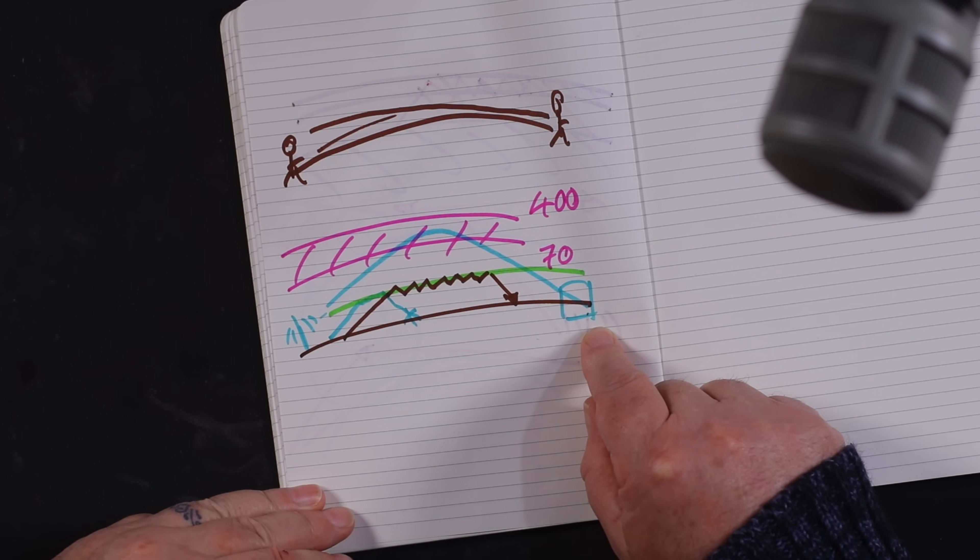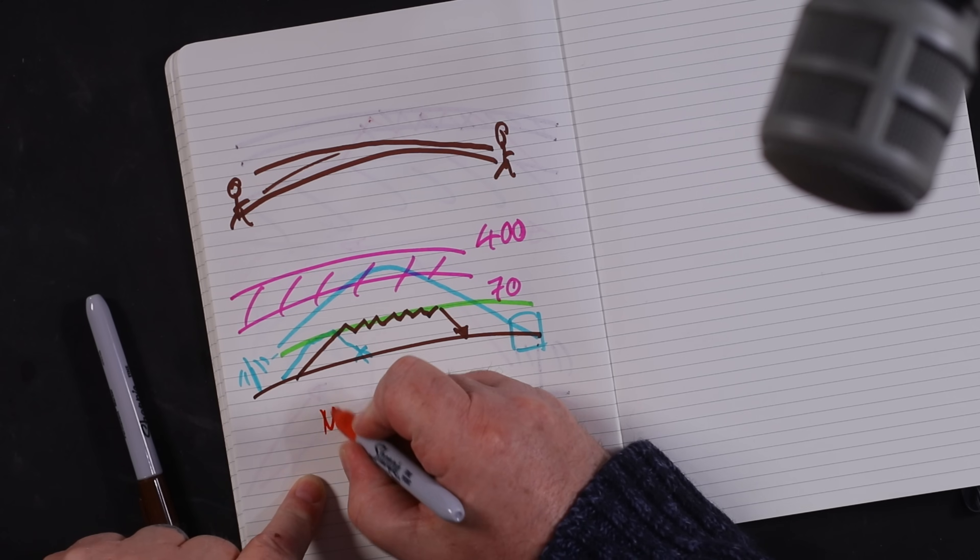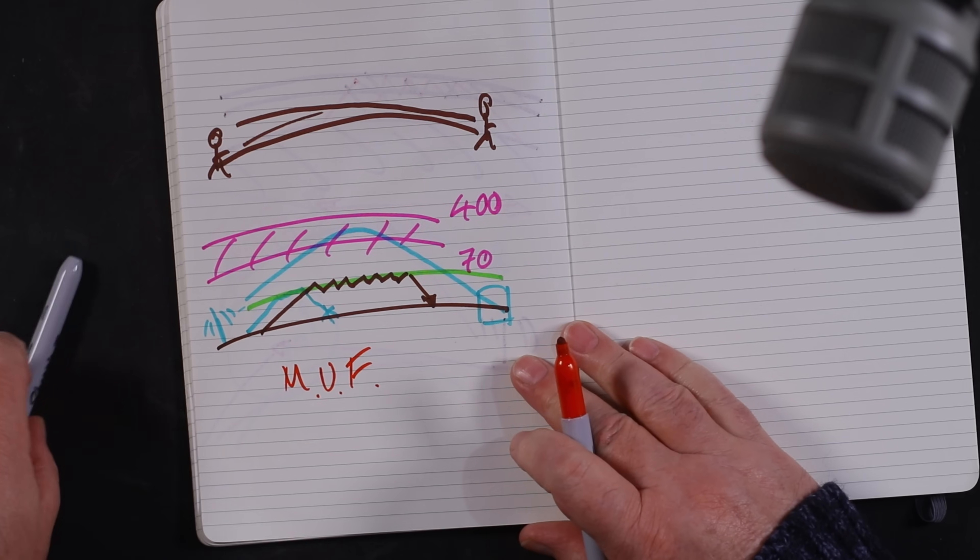Depending on sunspot cycles and other variables, not every frequency will achieve this bounce. The higher you go up in frequency on HF — up to 30 MHz — the harder it can be to achieve a contact. That's when the band is closed. The band opens when refraction starts occurring further up in frequency. They call it the Maximum Usable Frequency, or MUF — the point at which signals stop bouncing.